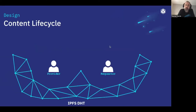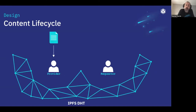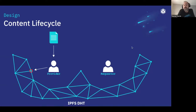In order to do that, I'm going to go through the IPFS design on the content lifecycle — what happens from content publication to content request and retrieval. Assume you have a document, you hash it, and what you put on IPFS, as you all know, is a provider record. The provider record includes the contact details of the publisher as well as the CID of the person publishing the content.